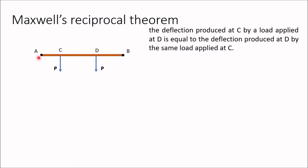Consider a simply supported beam AB subjected to two loads P of same magnitude at points C and D. Maxwell's reciprocal theorem states that the deflection produced at C by a load applied at D is equal to the deflection produced at D by the same load applied at C. That means if you apply a force P at point C, point D will also deflect, and that deflection will be equal to the deflection of point C due to the same load P.